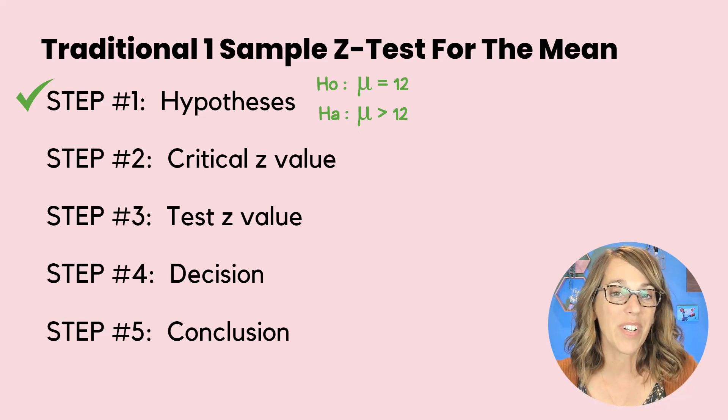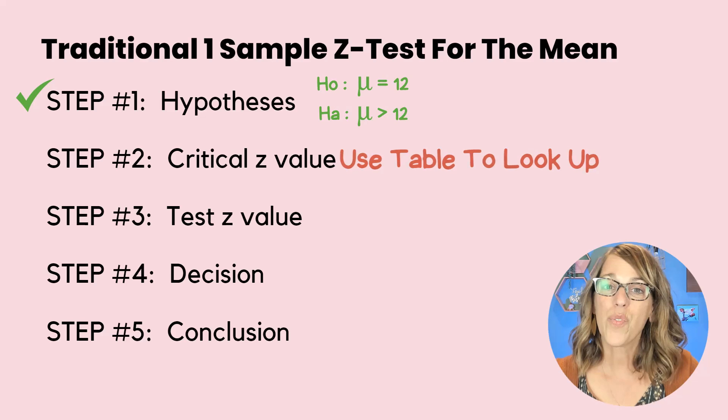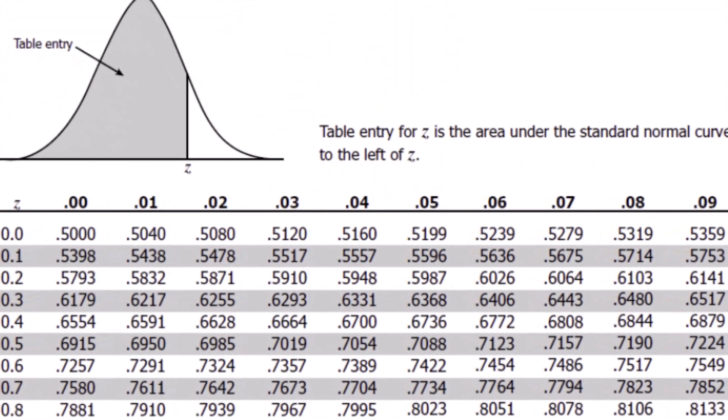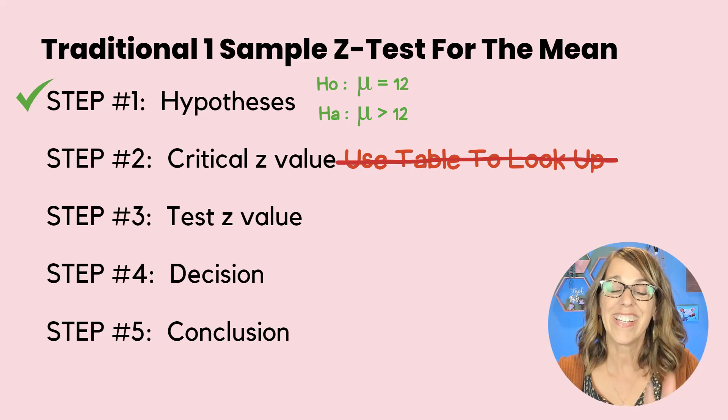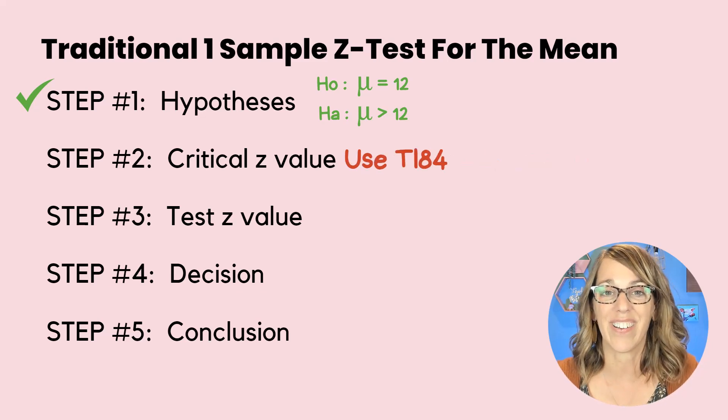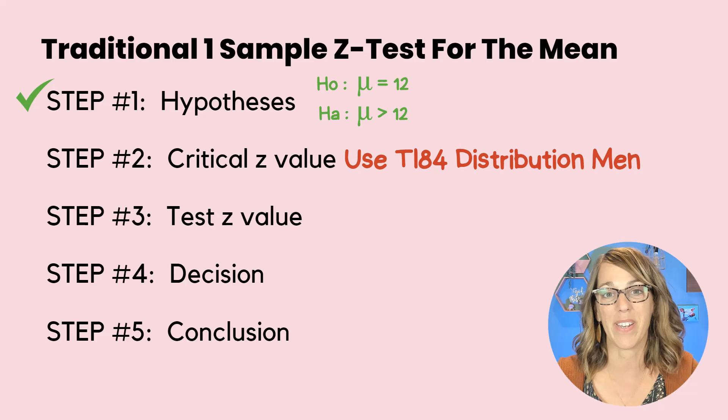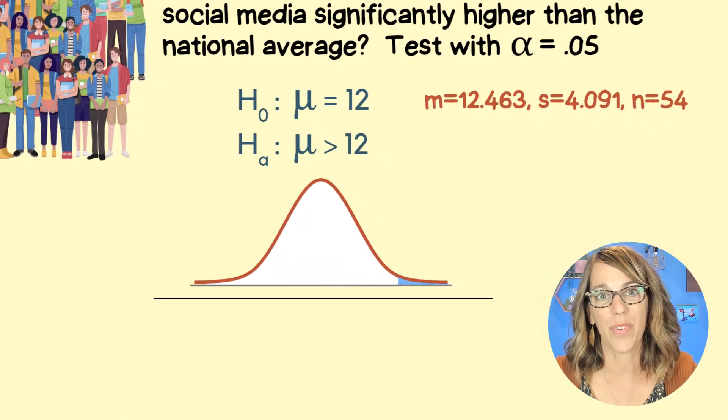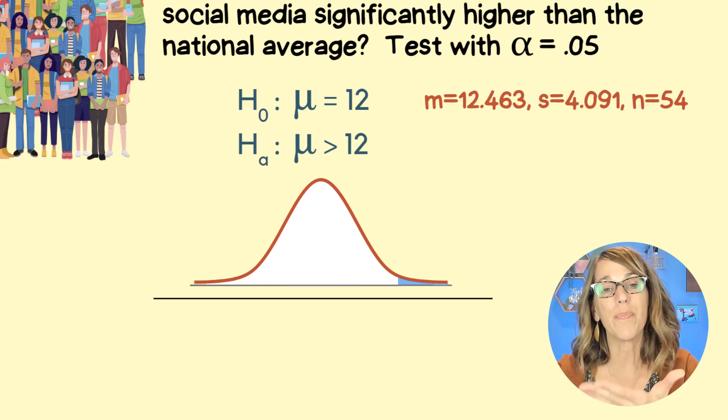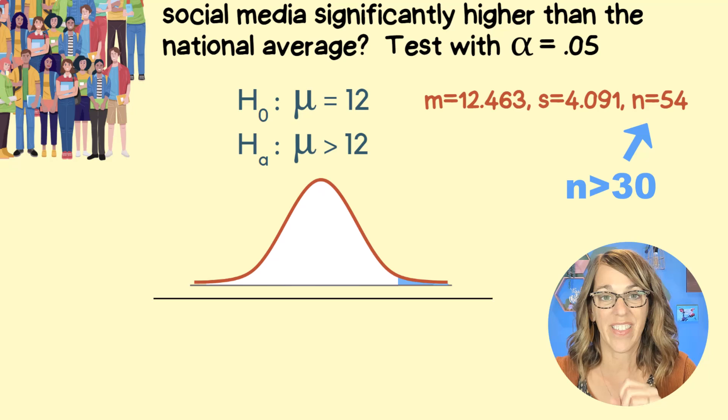Step number two is to find that critical Z value. Now normally we would use a table to look up this Z value, but we are not going to do that. Instead, let's use the calculator's distribution menu. To find that critical Z value, we need to define our normal curve. And I can use the normal curve because I've got a sample size large enough, one that is greater than 30.